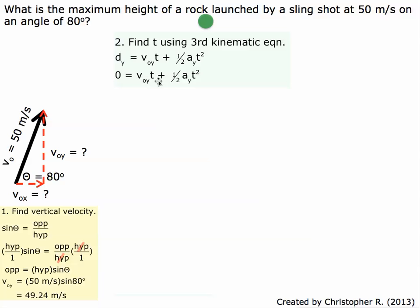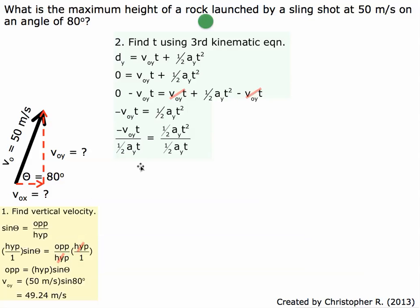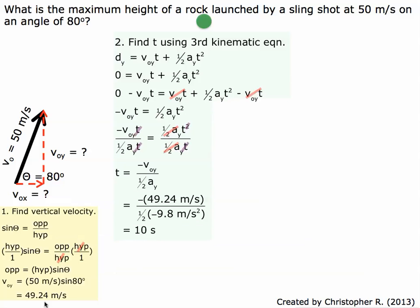We subtract VT from both sides, giving us negative VT equals half AT squared. Then we divide both sides by t and by half A. The t's cancel on the left, and one t cancels on the right, and the half A cancels on the right. We end up with t equals negative V over half A. Plugging in our numbers — V is 49.24 meters per second and A is negative 9.8 meters per second squared — we get 10 seconds total.